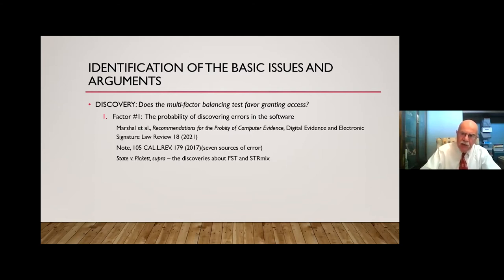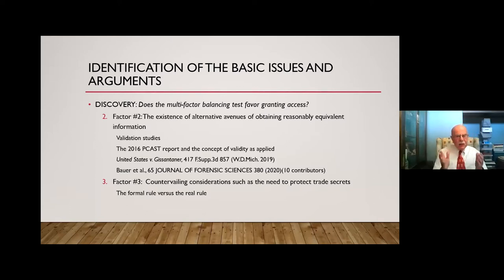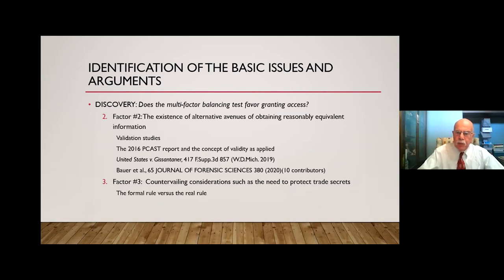If there are potentially significant defects in the source code, factor one seems to cut in favor of allowing discovery. But factor two — which I submit will prove to be the real decisive battleground — is the existence of alternative methods of obtaining reasonably equivalent information about the existence of such defects. In some cases, it's relatively clear: you either need a new validation study or grant access to source code — those are cases where the fact situation exceeds the parameters of the validation study.